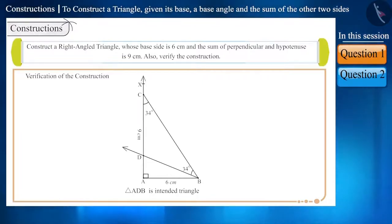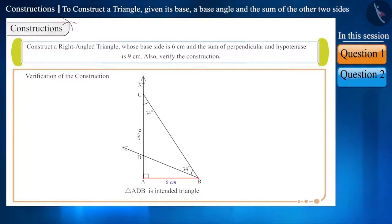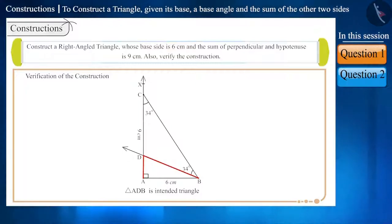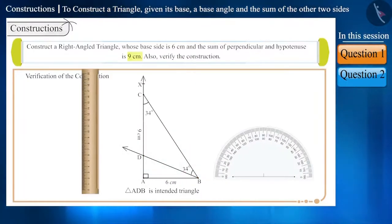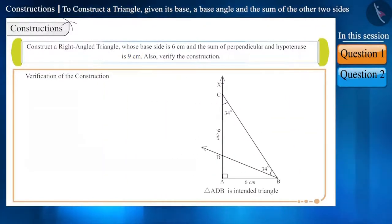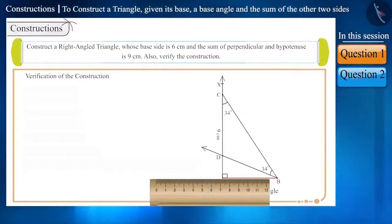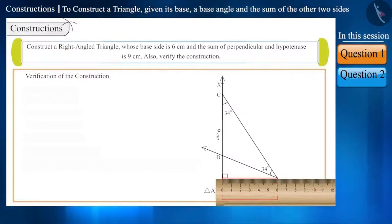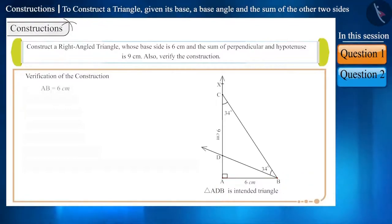Now, we will verify this construction. For verification, according to the question, the base side should be 6 cm, the angle drawn on it should be 90 degrees, and the sum of the other two sides should be 9 cm. So, with the help of a scale and a protractor, let's measure this construction. First of all, when we measure the length of the base side, the measure of base side AB is obtained as 6 cm.